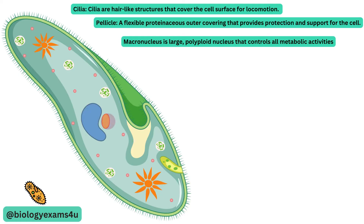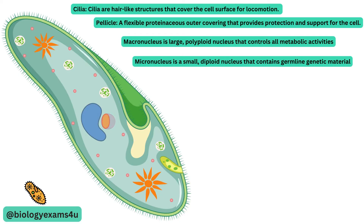The micronucleus is a small, diploid nucleus that contains the germline genetic material for reproduction. It is responsible for the exchange of genetic material during conjugation, a sexual process that helps to maintain genetic diversity in the population.